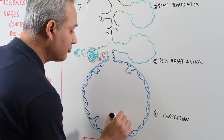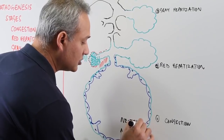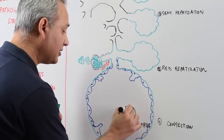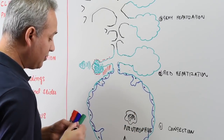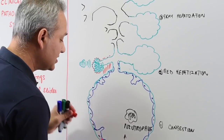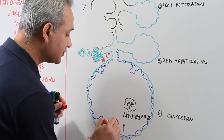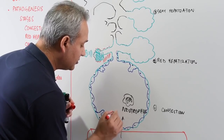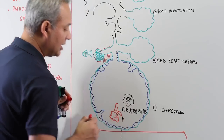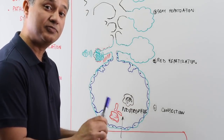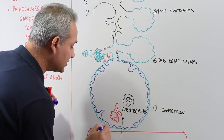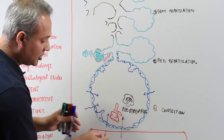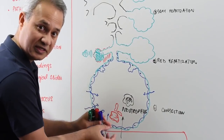In the congestion stage, inflammation begins: neutrophils start entering the alveoli, followed by red blood cells, and then proteinaceous exudate starts appearing. The exudate accumulates because the inflammatory process causes local vascular congestion and increased permeability, allowing fluid and cells to pour into the alveolar spaces.